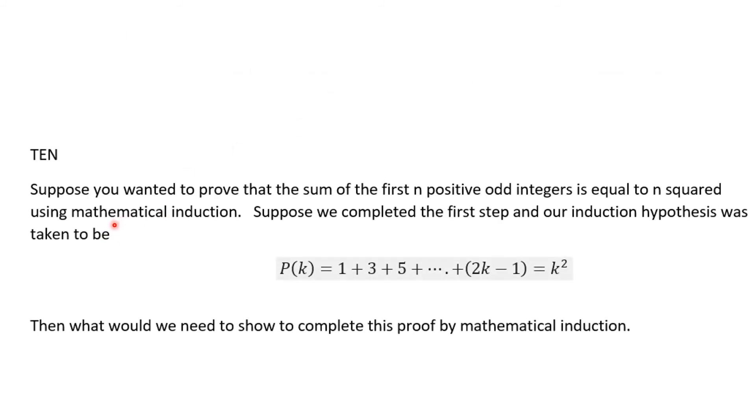Problem number 10 is another one on math induction. Suppose you wanted to prove that the sum of the first n positive odd integers is equal to n squared using math induction. This is a lot of what was discussed in chapter two, and this is the same problem we've been talking about since problem eight. Suppose we completed our first step, which was problem eight, and our induction hypothesis was taken to be this. Then what would we need to show to complete this proof by mathematical induction?